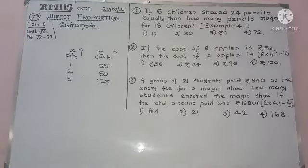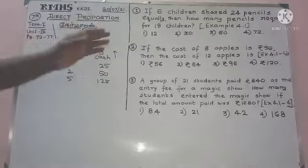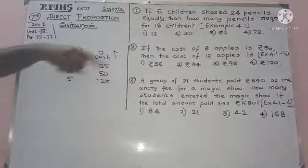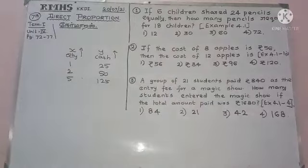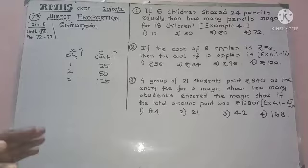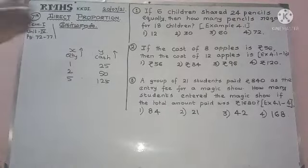If 6 children share 24 pencils equally, then how many pencils are required for 18 children? This is example 4.1. This is the filling-the-blanks type. This is the sum of example 5.1.